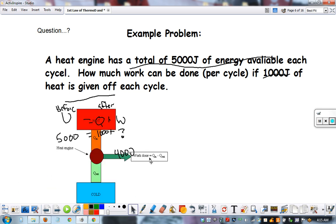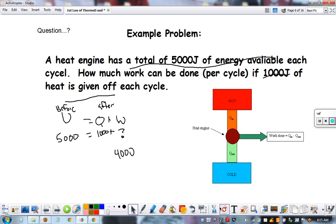You can also look at it like this. This is our available, this is our U, this is our work done, and this is our waste. Energy can go this way or it can go that way. But combine these two and it always has to come up here. 5,000, 1,000, this must be 4,000.